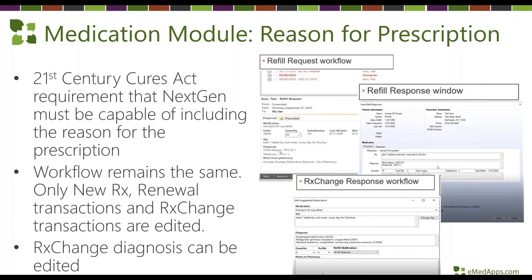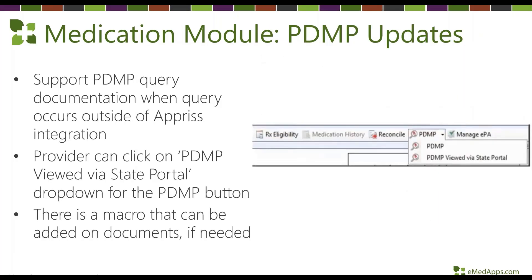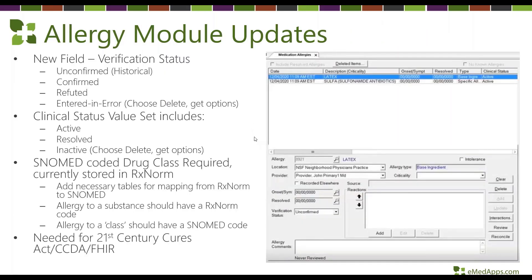The 21st Century Cures Act requires that Next Gen include a reason for the prescription — meaning the diagnosis code — so you'll see changes related to the diagnosis code being available and editable for your prescriptions. PDMP updates include an additional dropdown option: 'PDMP viewed via the state portal,' so if your state isn't served by Appriss, or if providers prefer the state portal, you can document that the review was completed within the patient's chart.